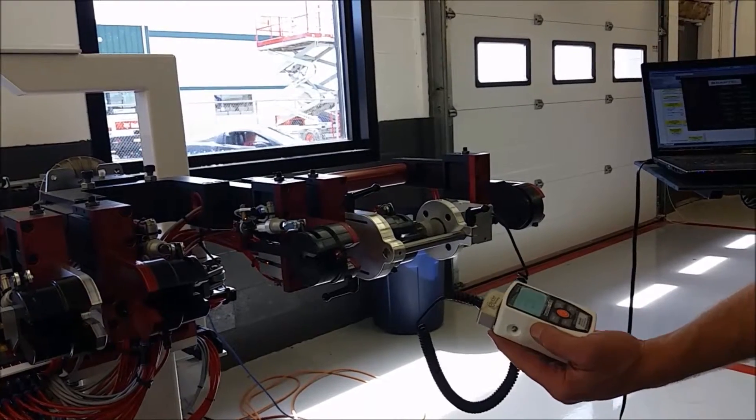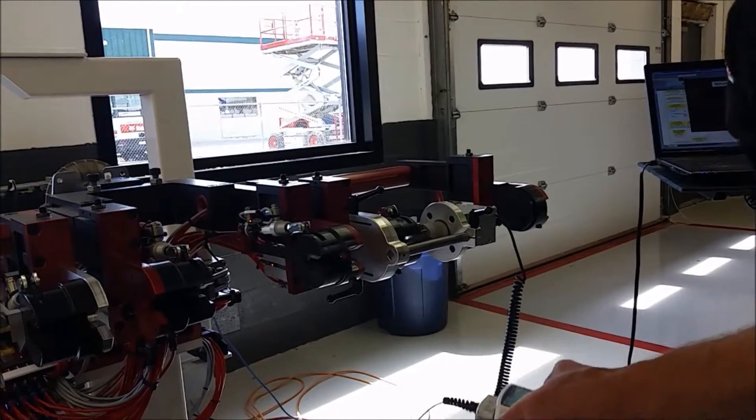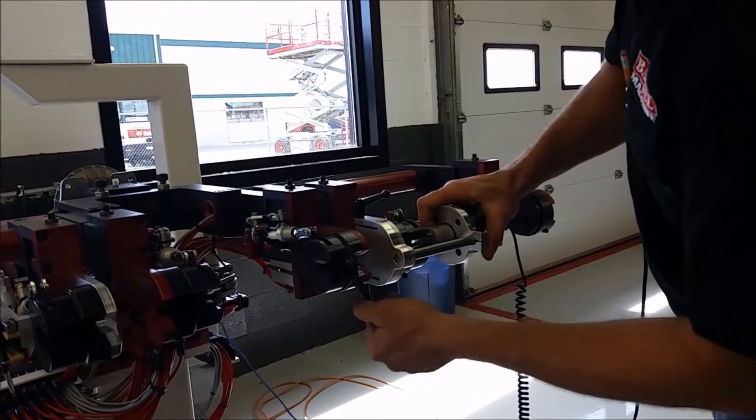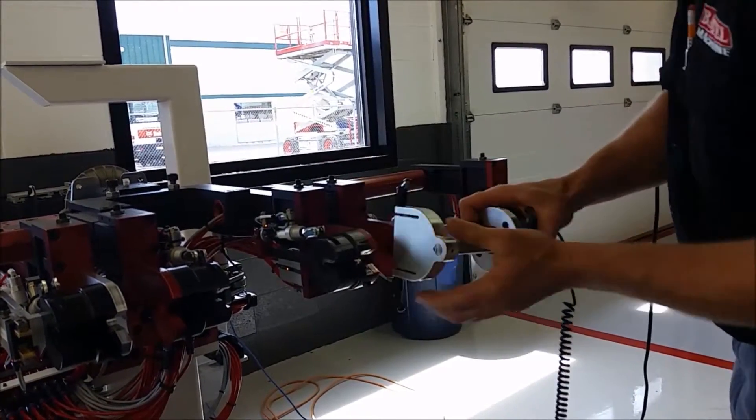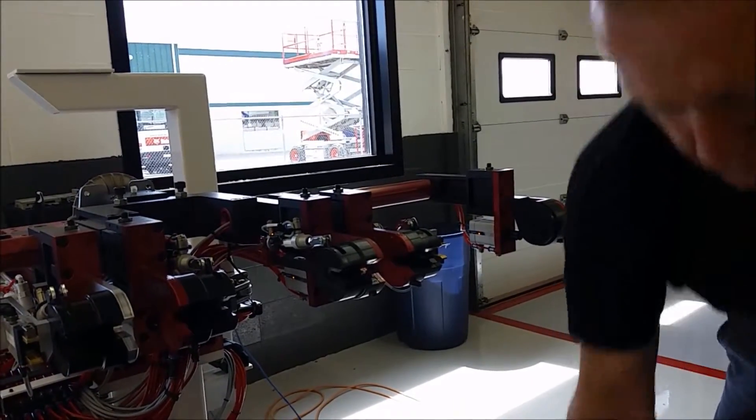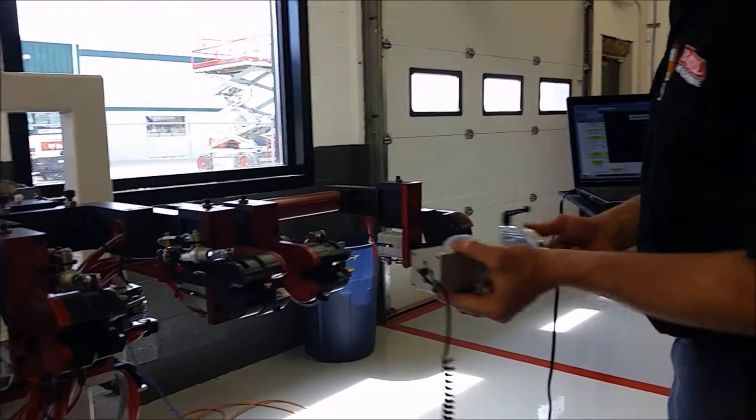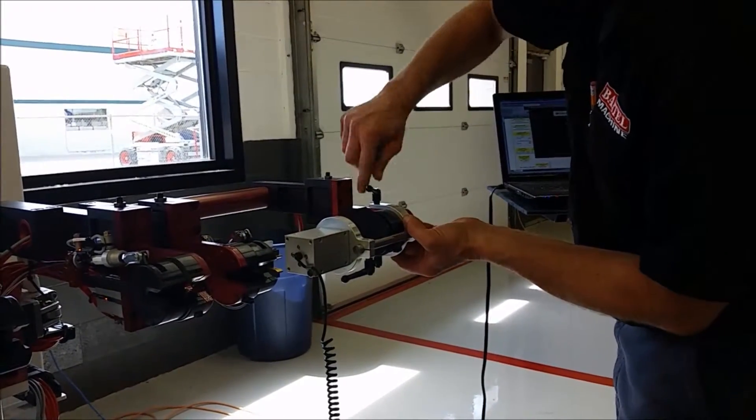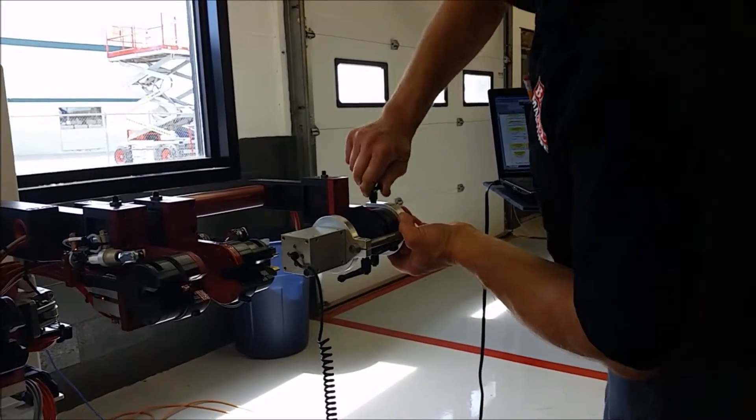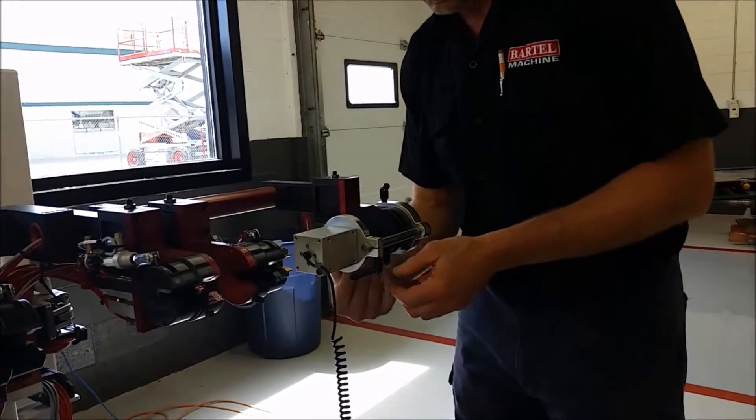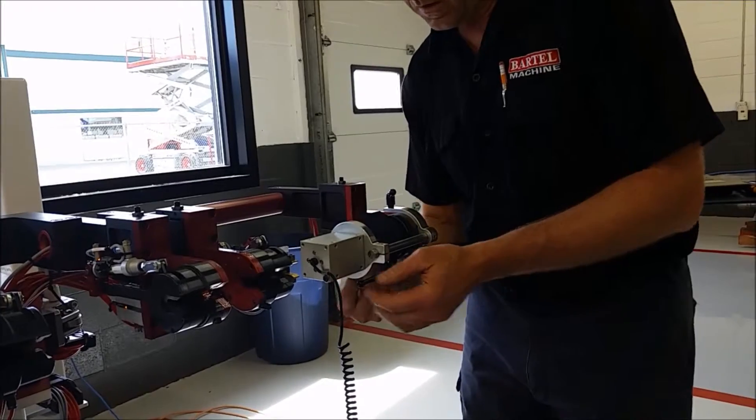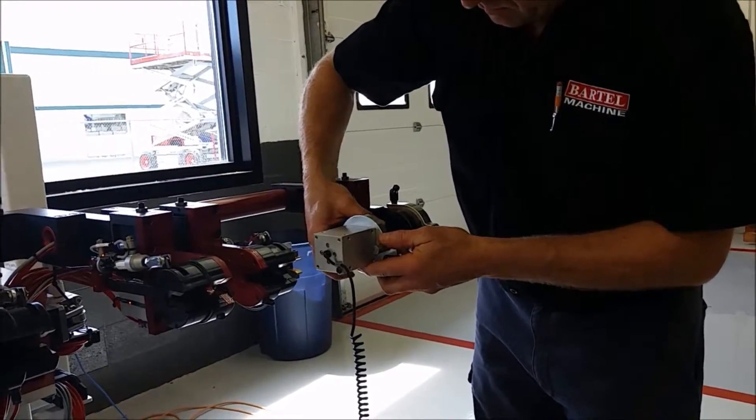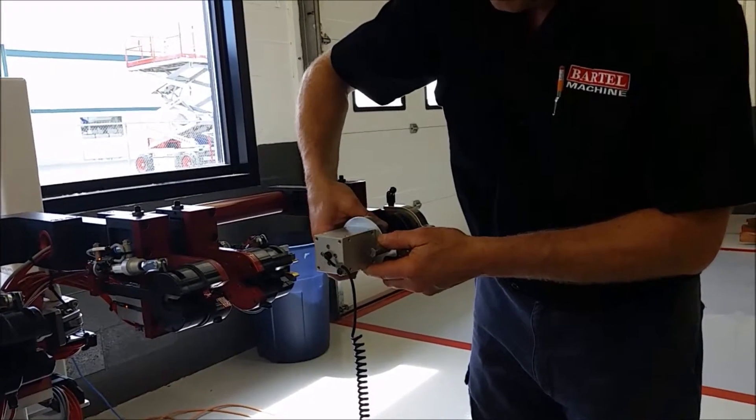Okay, and then we're going to loosen the clamp and move on to the outside. Go to the square drive arbor. Clamp it on tight against the back and insert it into the drive.